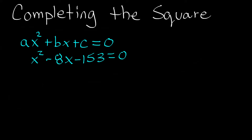Now that we have the a coefficient as one, we move on to step two. In step two we look at the b term. In our case b happens to be negative eight, so we write b equals negative eight.